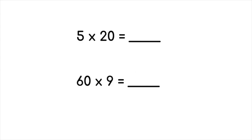Let's do two more multiples of 10. We have 5 times 20. Our basic fact will be 5 times 2, and 5 times 2 gives us 10. Then we're going to add one more zero to make it 100. So 5 times 20 equals 100. Don't get tricked with that extra zero — one of the zeros is from 5 times 2 being 10, and the extra zero is from the 20.